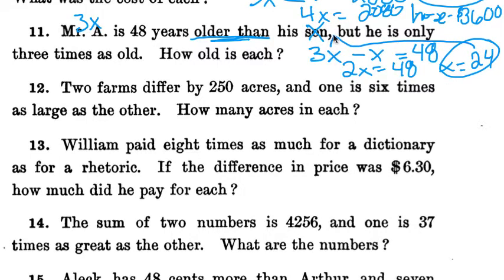So 24 is the age of the son. 24 times 3 for Mr. A is 72. So 24 years old and 72 years old. And you can go back and double check: Is 72 three times 24? Yes. And is it 48 years older? Yes. So we're good for that one.